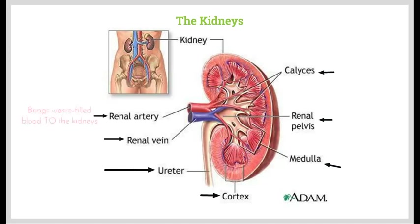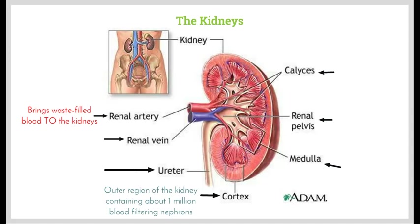We have the renal artery, whose job is to bring waste-filled blood to the kidneys. It then enters the outer region of the kidney, which is the cortex. The cortex contains about a million blood-filtering nephrons, which we'll look at in the next slide — that's probably the thing we'll be focusing on the most during our time looking at the kidneys.